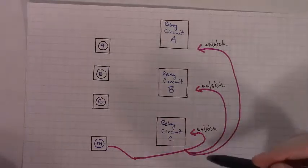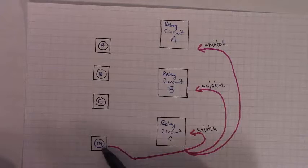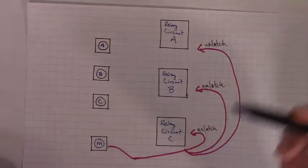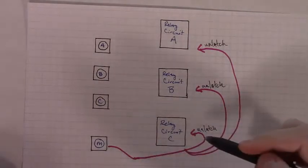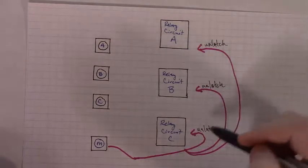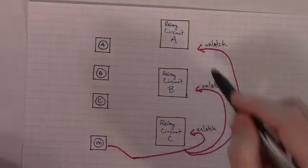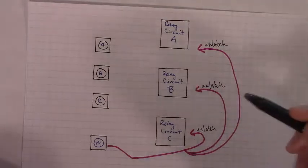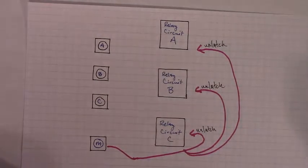Why would we want to unlatch all of them at the same time? Well, because the momentary button, unlike a microcontroller, it has no way of knowing which of the three would happen to be on at any given time. So, this is a sort of brute force solution that regardless of which of the three happens to be on, if we unlatch them all with a push of the master reset, then we know we're going to unlatch the one that did happen to be on. Well, it's brute force, but it works in the context of this kind of circuit.